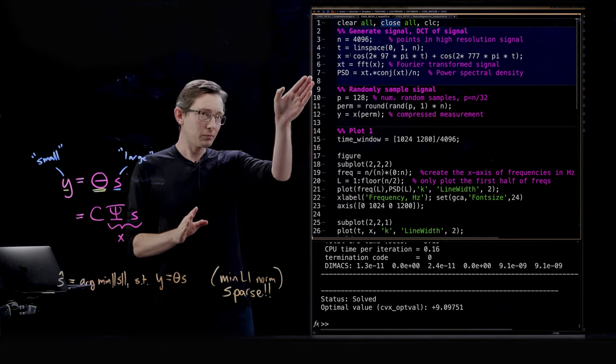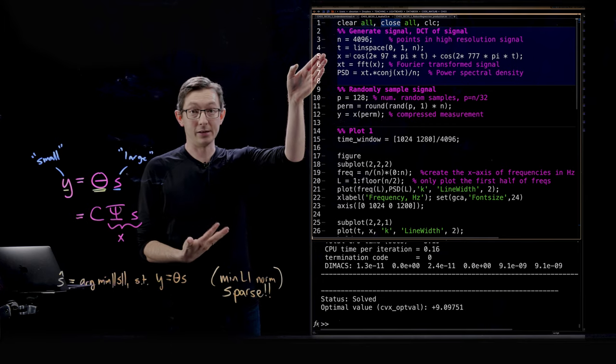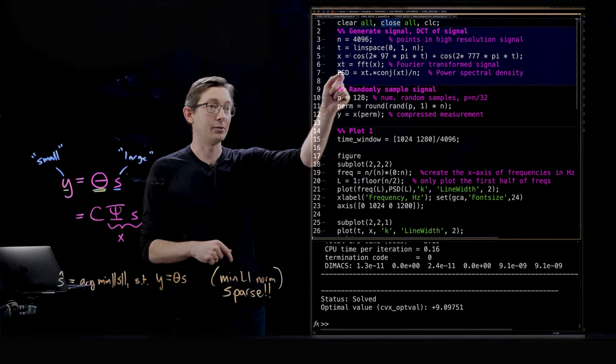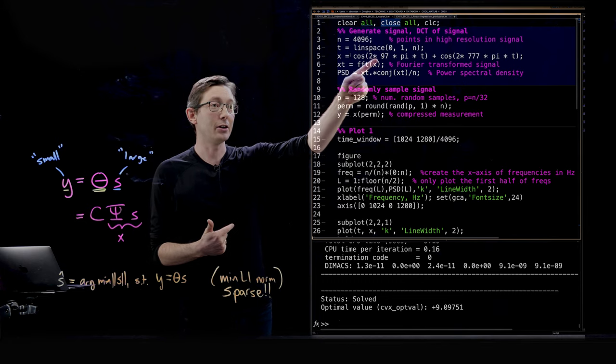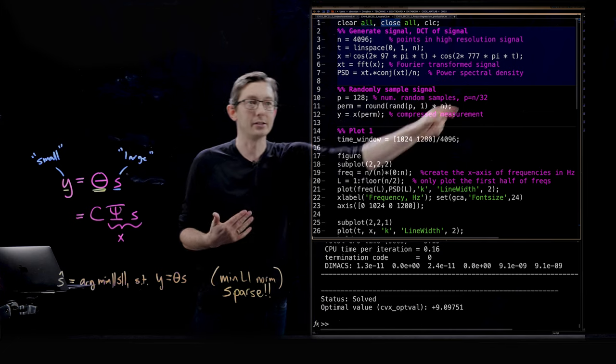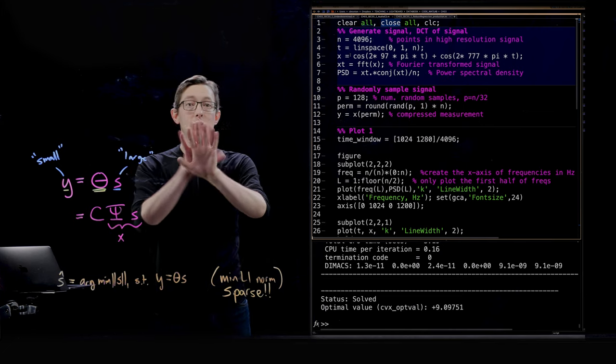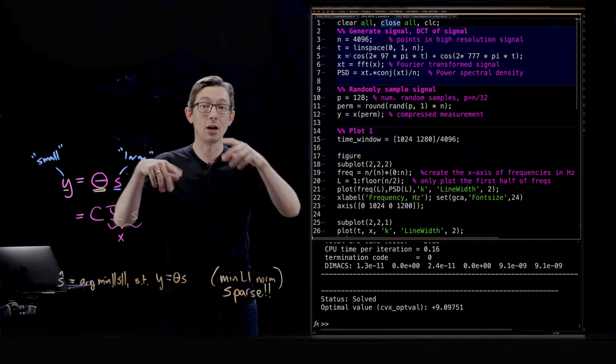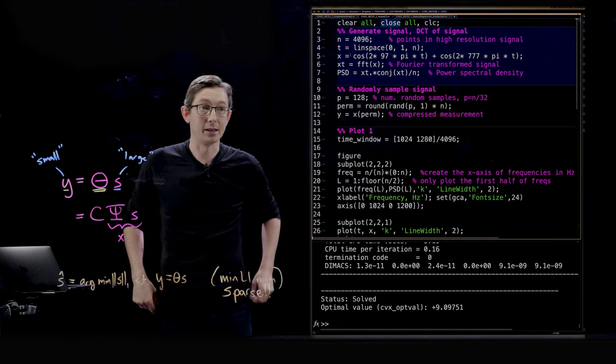Our toy example, we're going to cook up an audio signal that basically has two tones. We have a 97 Hertz and a 777 Hertz audio signal and I'm adding those two cosines together to get this two tone audio signal.